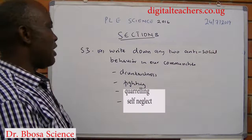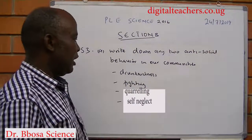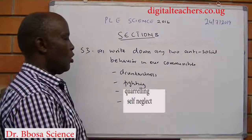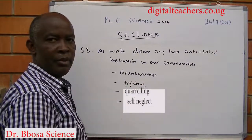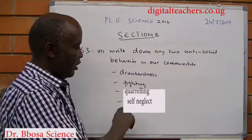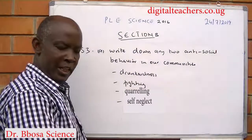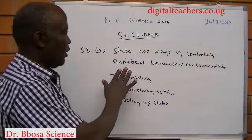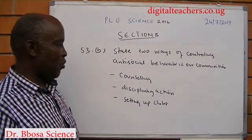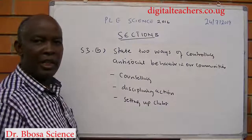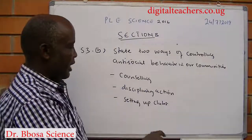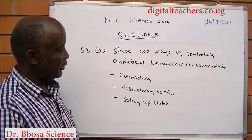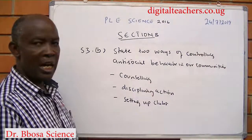Number 53: write down any two antisocial behaviors in our communities — drunkenness, fighting, quarreling, self-neglect. State two ways of controlling antisocial behaviors in our communities: counseling, disciplinary action, setting up anti-social behavior clubs.